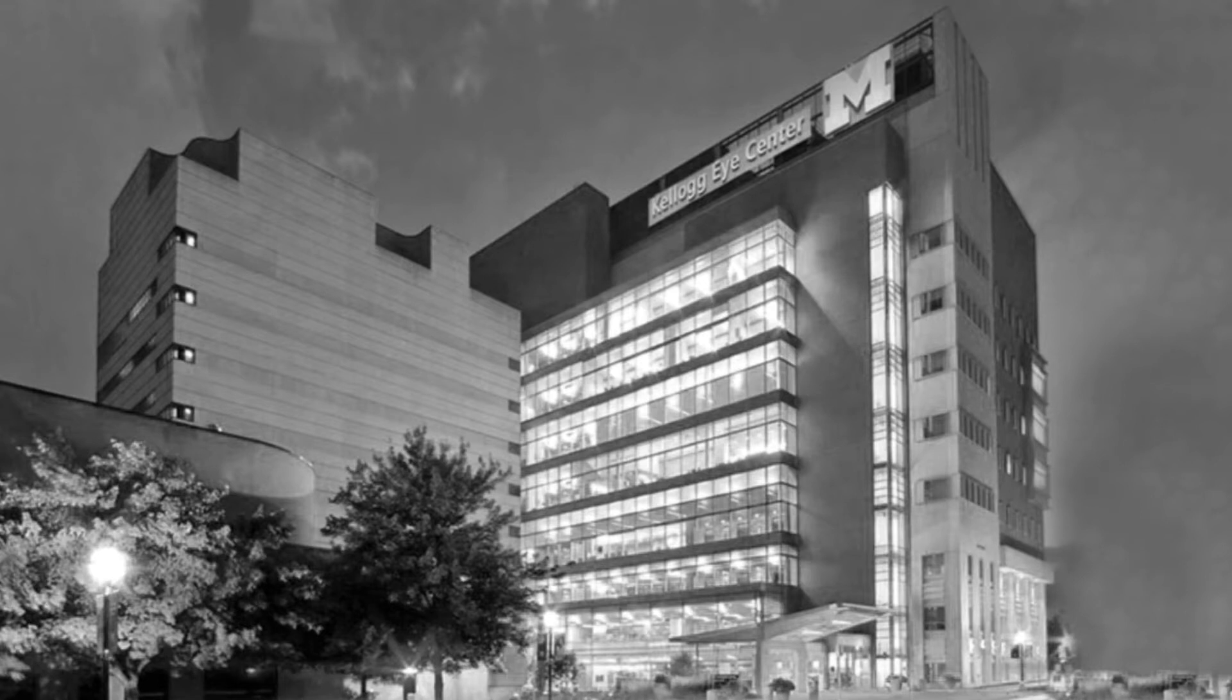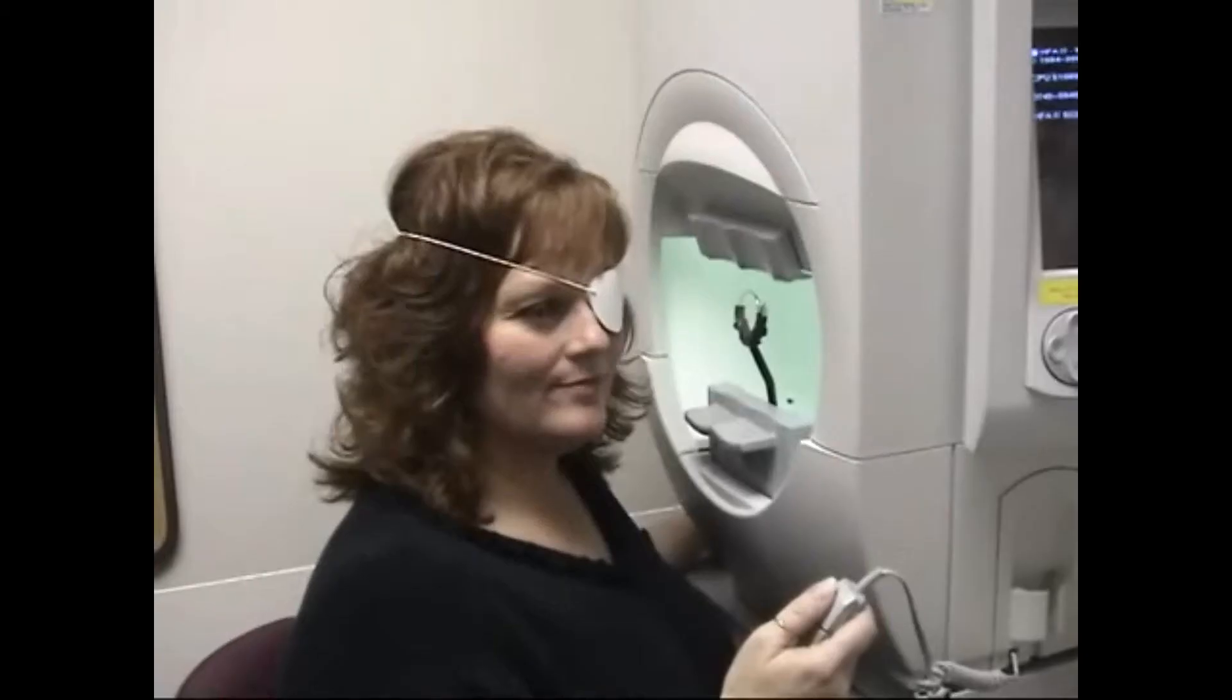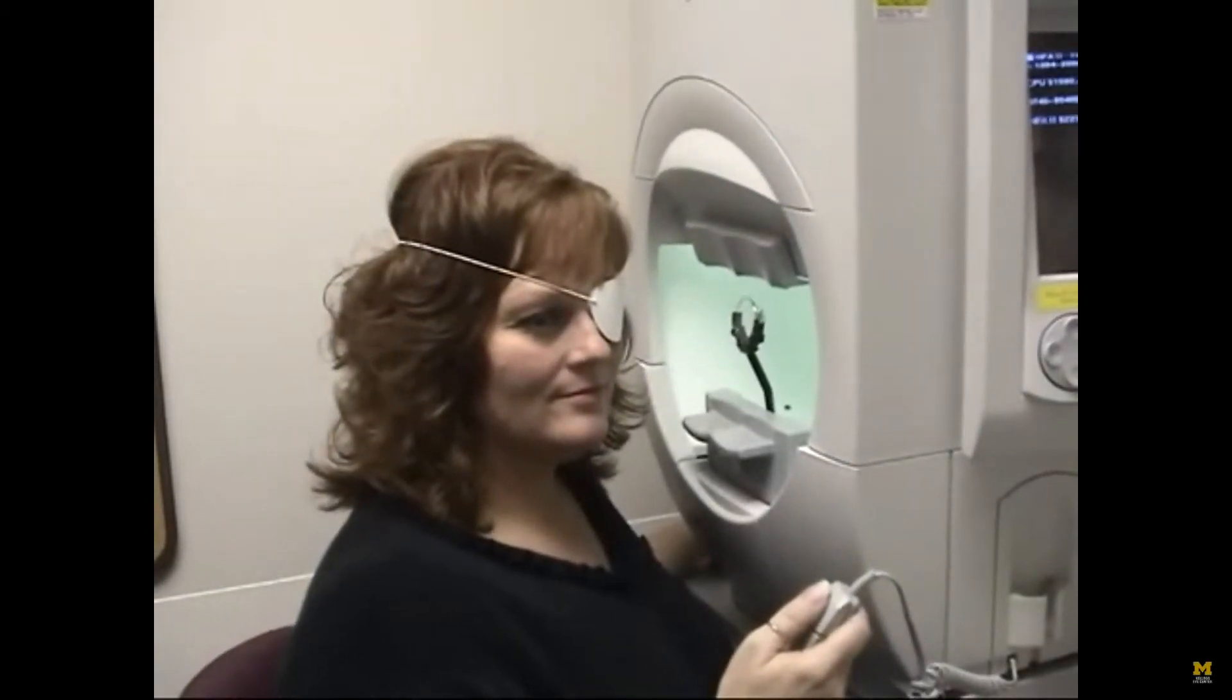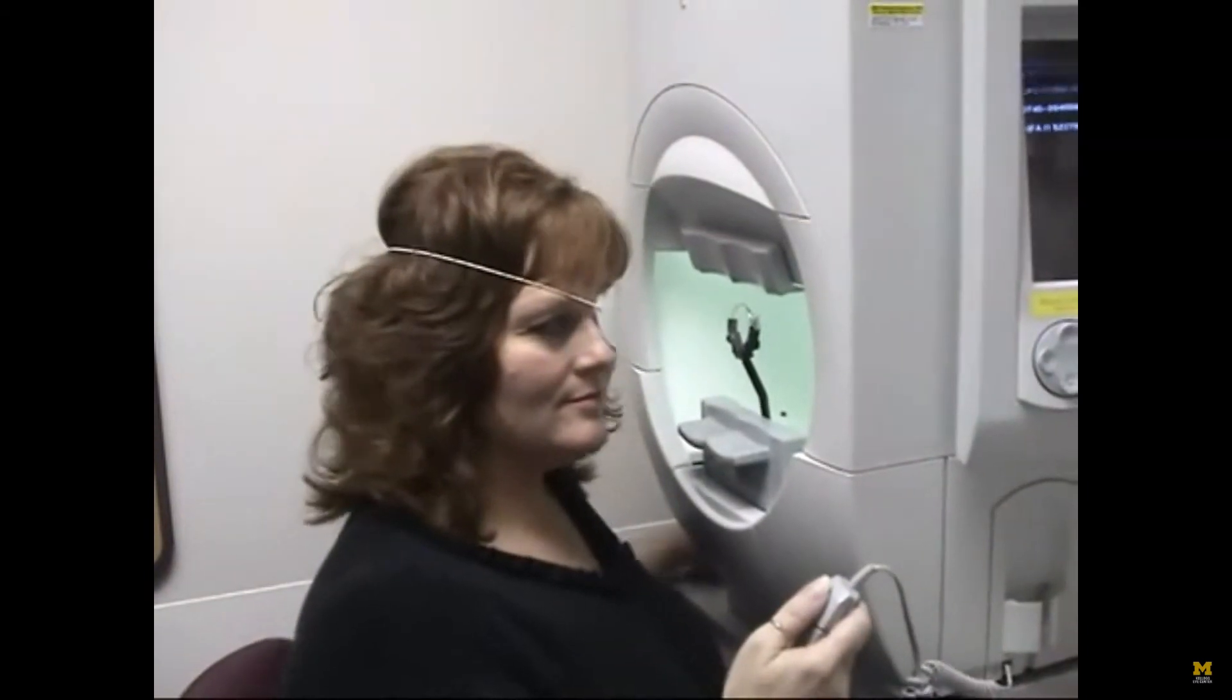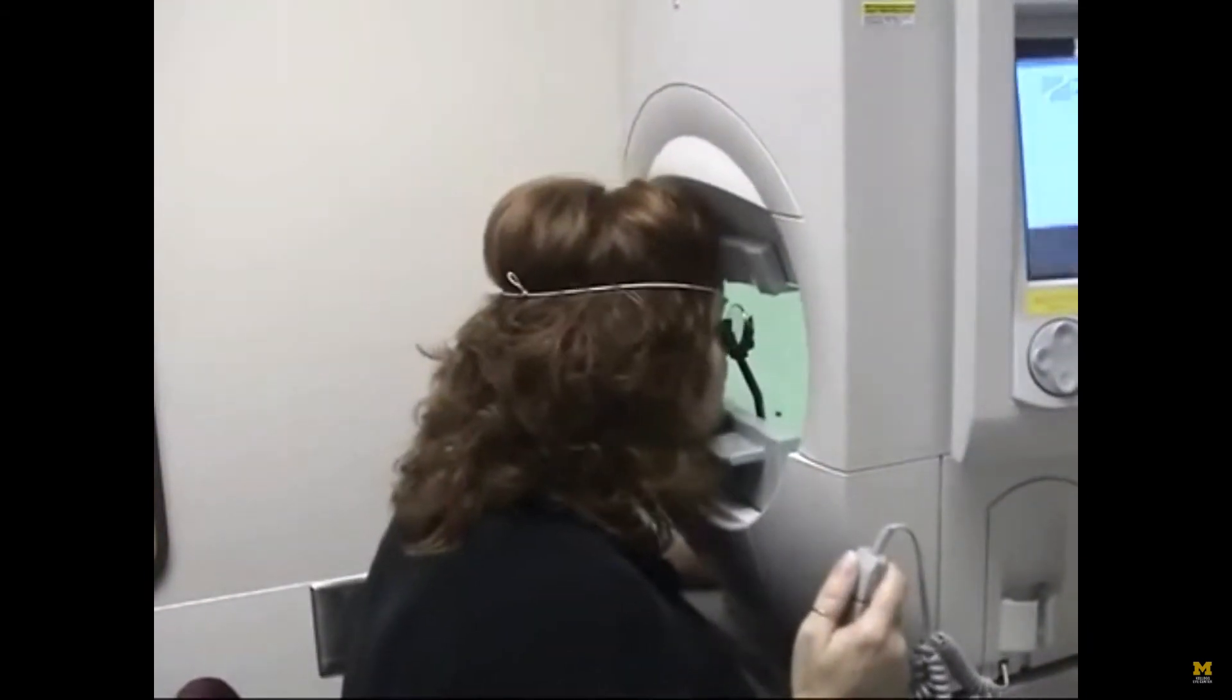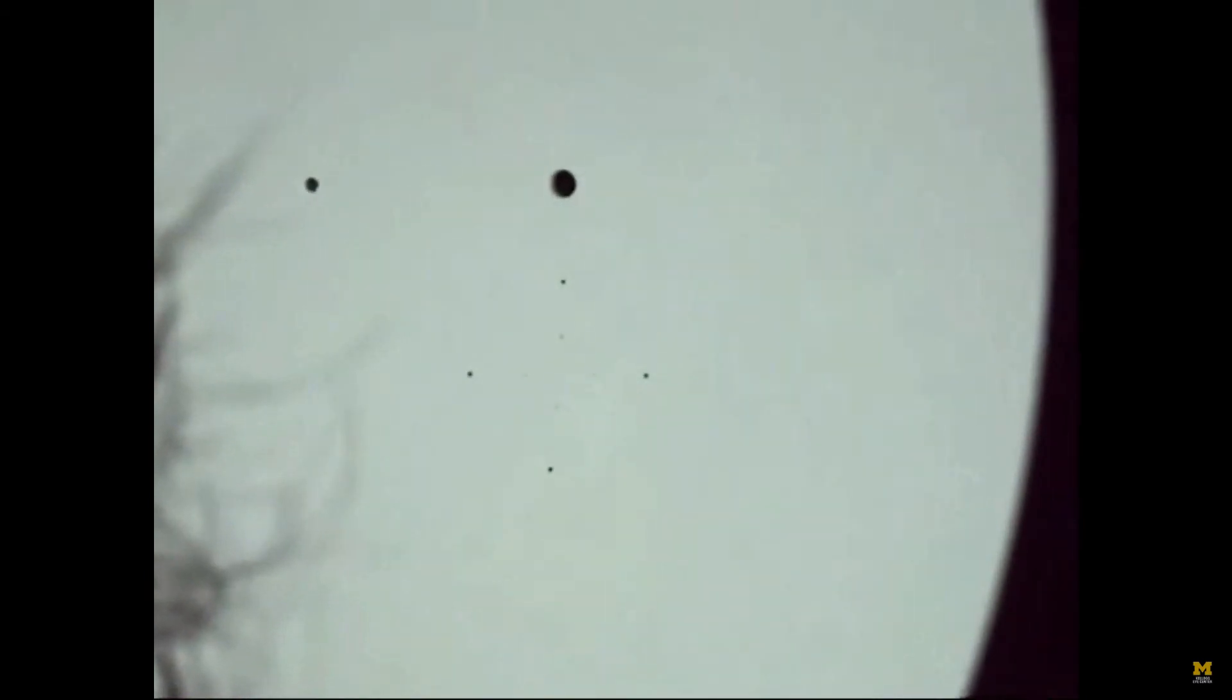Formal visual fields are a powerful diagnostic tool to assess the panorama of achromatic vision. Part 1 of this series showed you how they are performed. In this video, you will learn how to interpret the data produced by formal visual field testing.